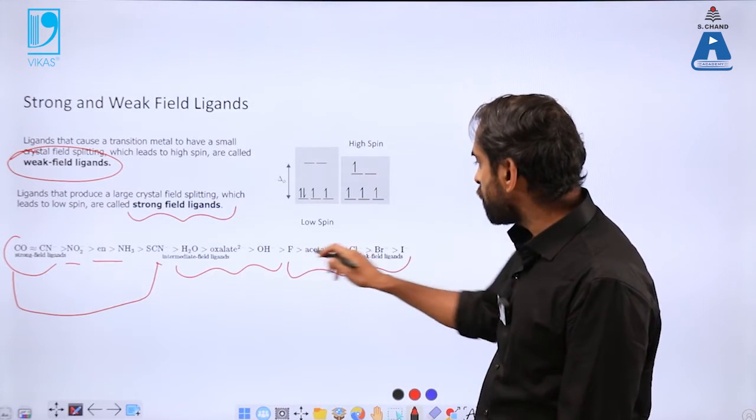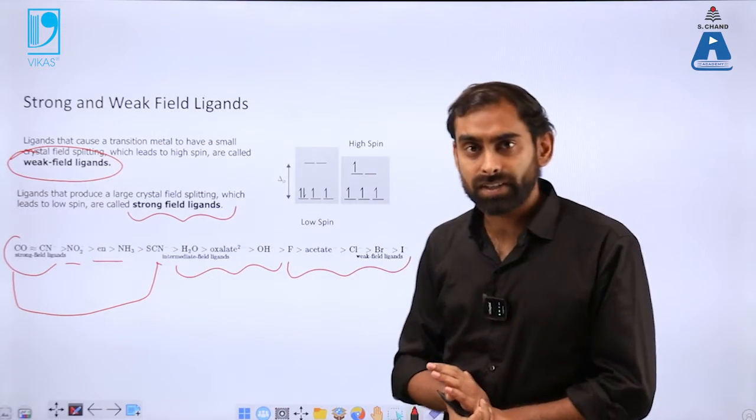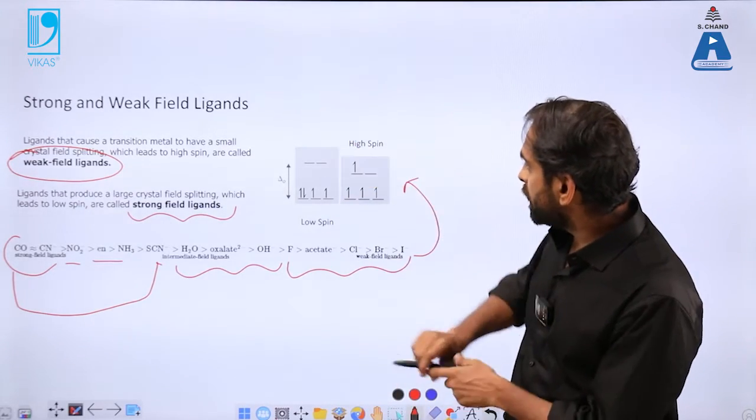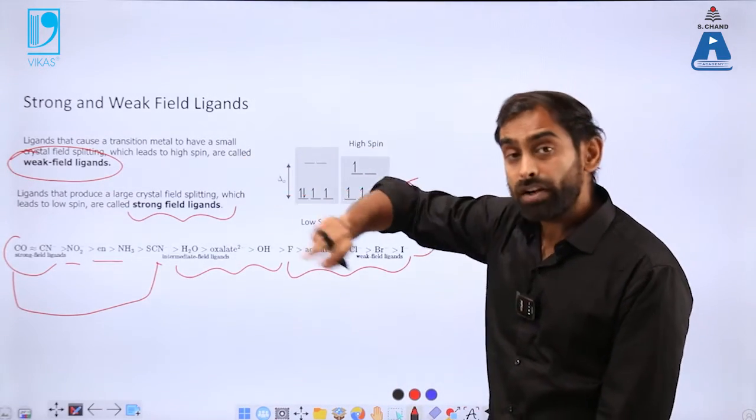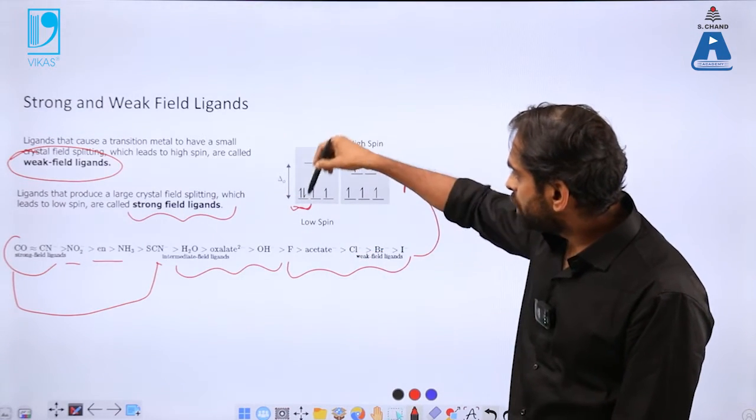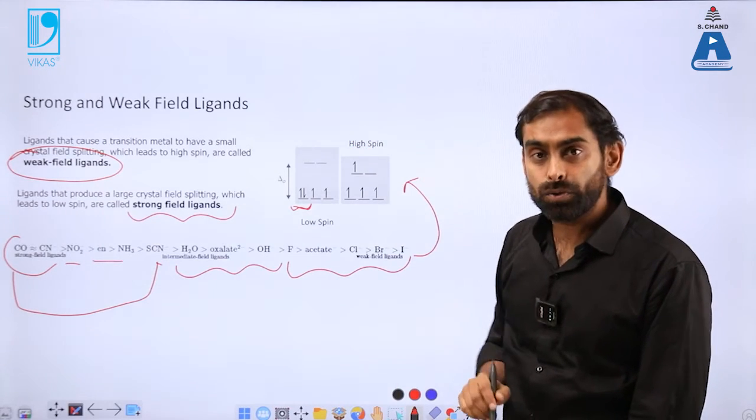On the other hand, fluoride, acetate, chlorine, bromine, iodine, they are much weaker ligands. And you will also realize that since the energy gap is more, when the energy gap is more, and when you are filling electrons, the likelihood of filling the electrons will be more in the lower energy states, that is t2g.